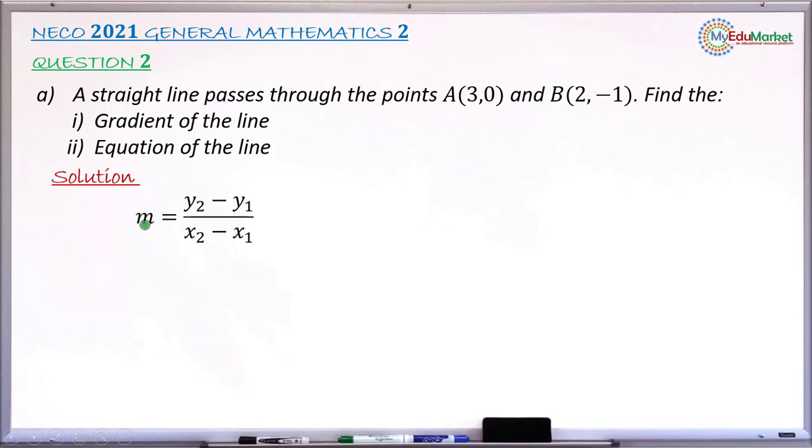In this formula, x1, y1 simply refers to the coordinate of one of the points on the line and x2, y2 refers to the coordinate of another point on the line. So in this case, if I take x1, y1 to be the coordinate of point A and x2, y2 to be the coordinate of point B, I can now substitute in the formula.